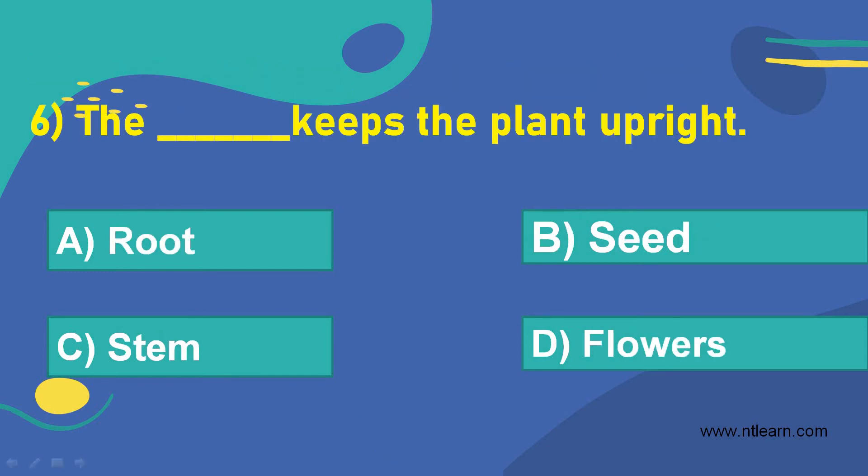The blank keeps the plant upright. Option A: root. Option B: seed. Option C: stem. Option D: flowers.